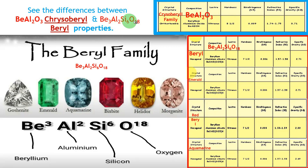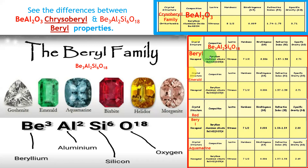Beryl is beryllium aluminium silicate. Look at this comparison table. I am describing the chrysoberyl family versus beryl. The chemical name for chrysoberyl is beryllium aluminium oxide; beryl is beryllium aluminium silicate. Luster: both are vitreous. Both are the same.